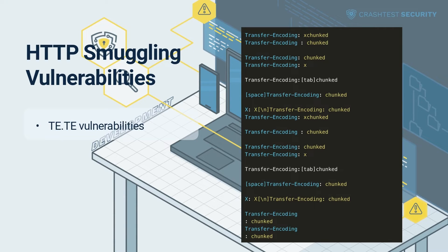In TE.TE vulnerabilities, both servers use the Transfer-Encoding header, but attackers can induce one of the servers not to process the request by obscuring it. Some ways to obfuscate the Transfer-Encoding header are shown in the video. The attacker specifies an obfuscated Transfer-Encoding header so that the front- or back-end is induced not to interpret it, then proceeds with an attack similar to those explained in CL.TE and TE.CL vulnerabilities.